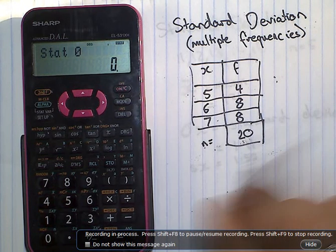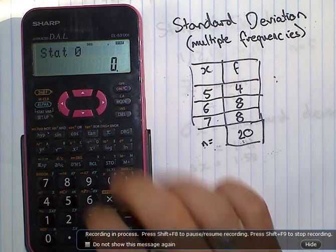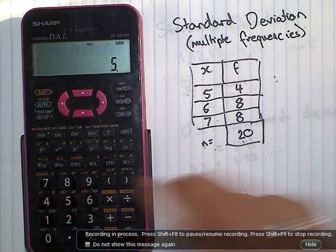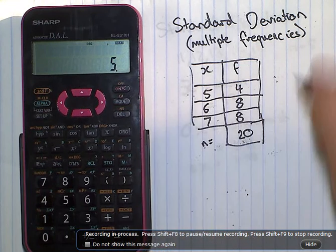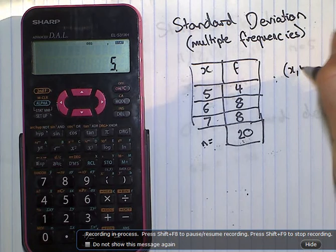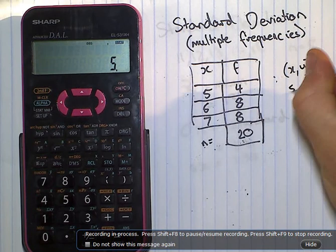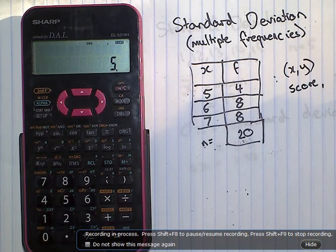So, let's get started. Five. Underneath the store button you'll see X dash, or X comma Y. This is for score, and then the frequency.